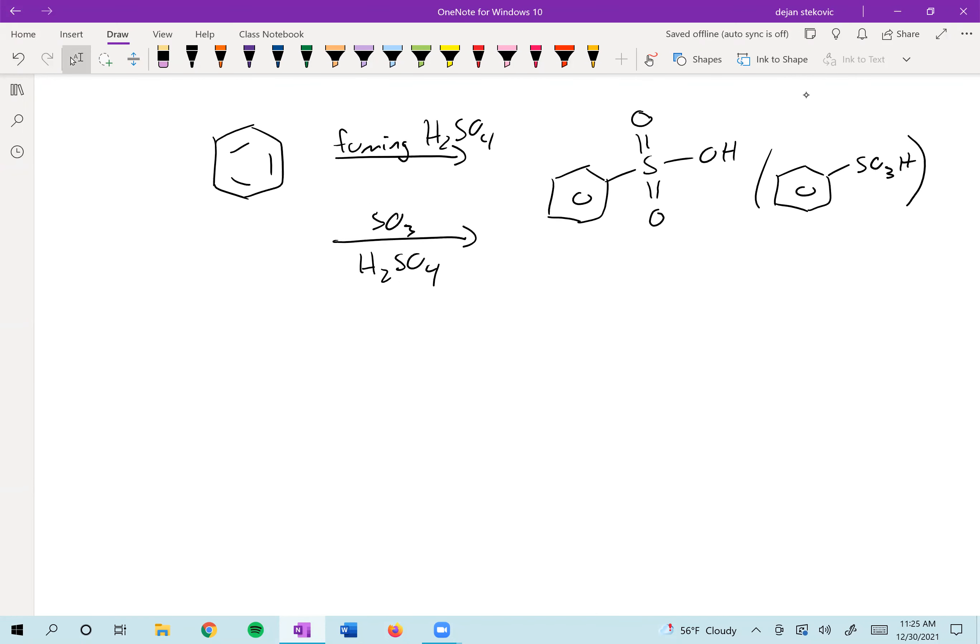The reason that we can do this is because if we think about SO3, the sulfur is doubly bound to three oxygens. Oxygen is of course more electronegative than our sulfur, which makes this sulfur in the middle very electrophilic.